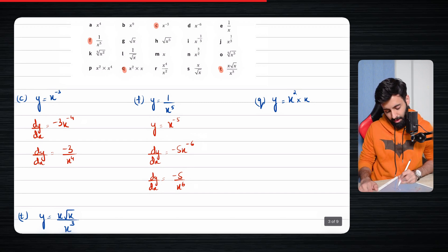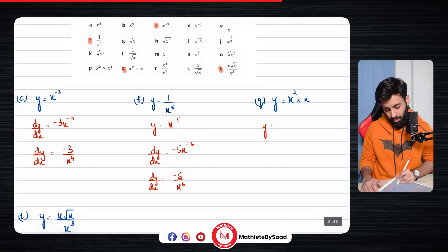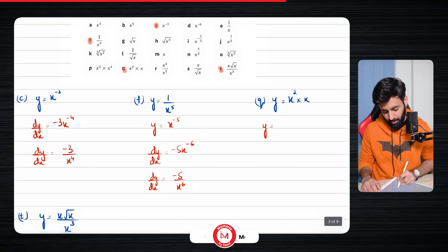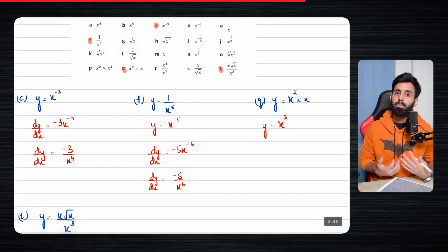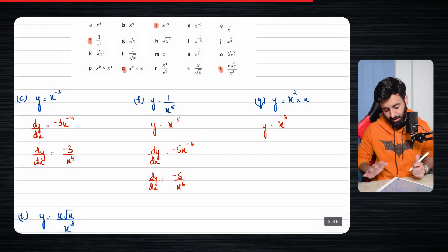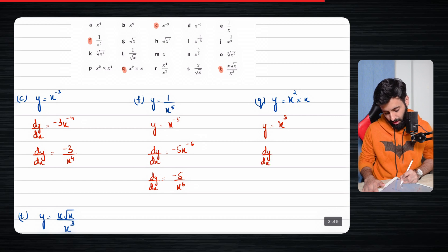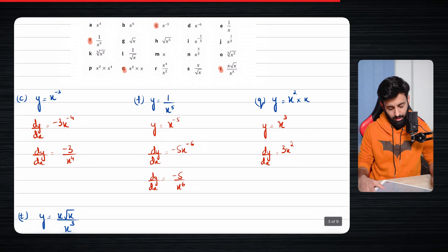Then comes part q, which has a bit of simplification to do. x cubed into x — we're not going to differentiate them the way they are. First we're going to simplify them. Same bases are being multiplied, so the powers are going to be added. That's exactly what I've done. Now differentiating gives us 3x squared.